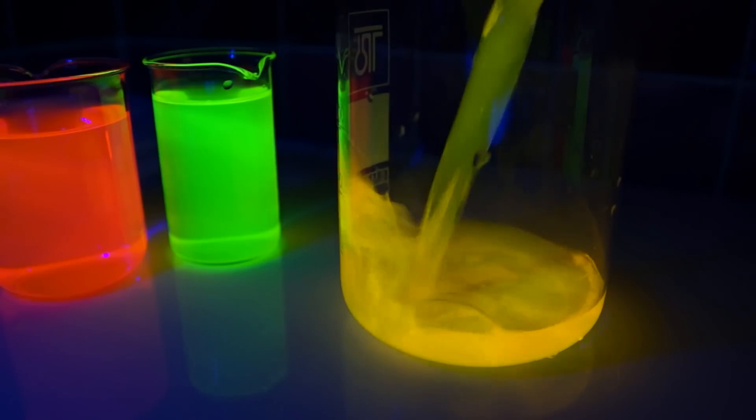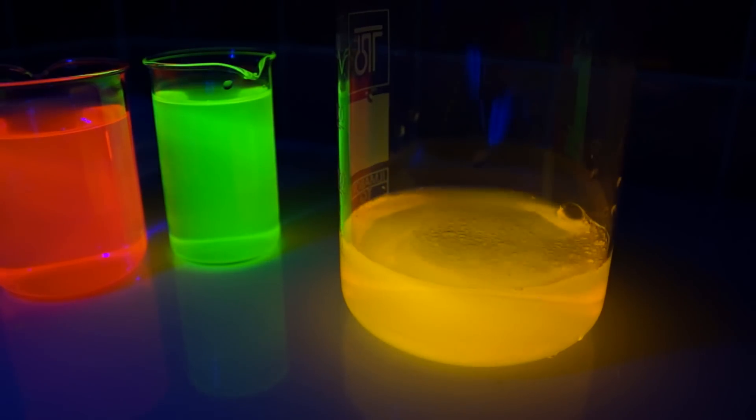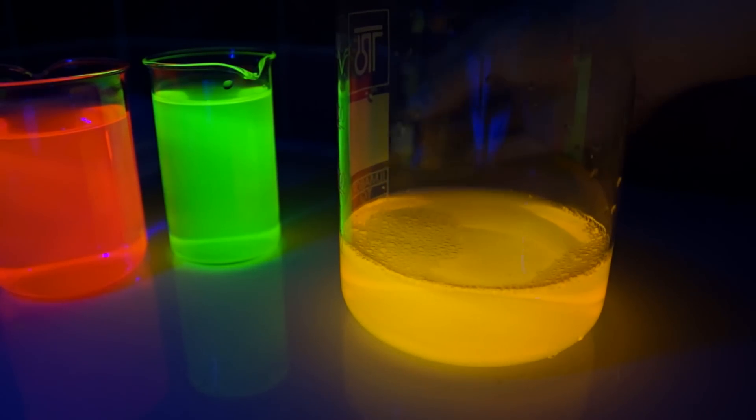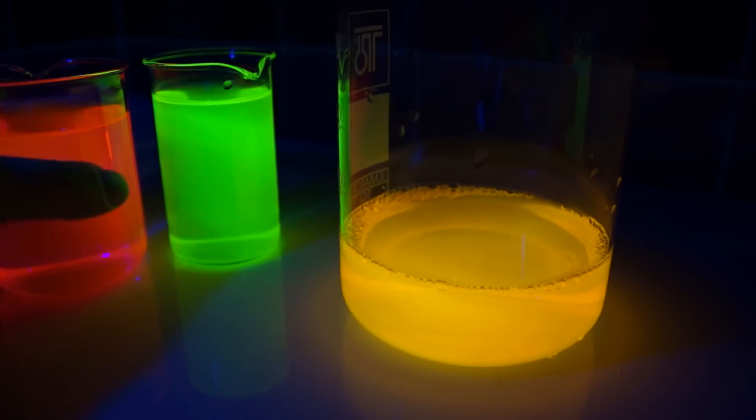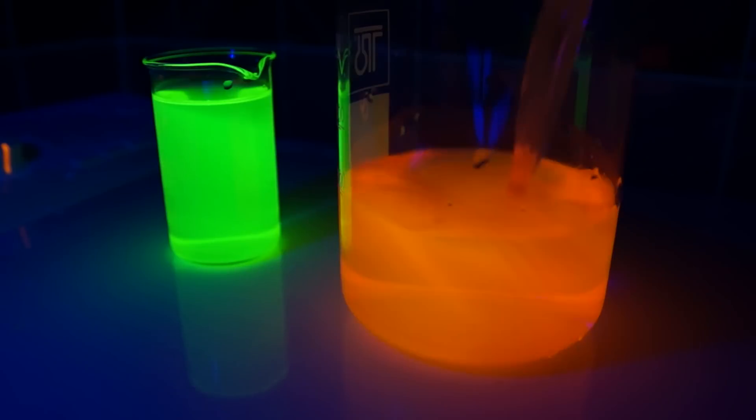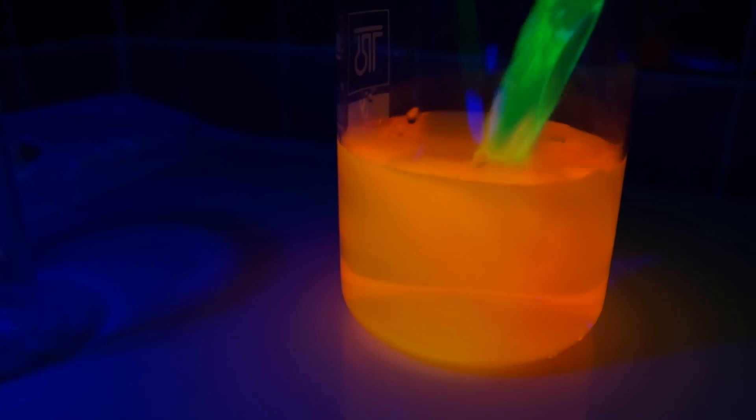Let's try and mix several different solutions of fluorophores and see what color it will obtain. First I pour Rhodamine-6G which is yellow. Next I pour Rhodamine-B. The solution turns orange. Finally I'm topping it up with a solution of Fluorescein.